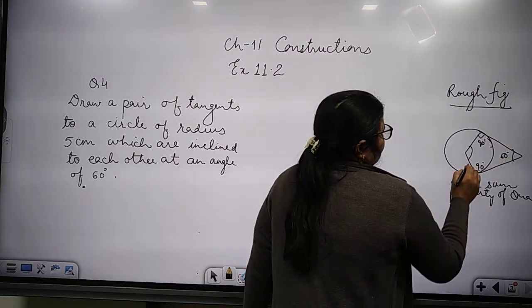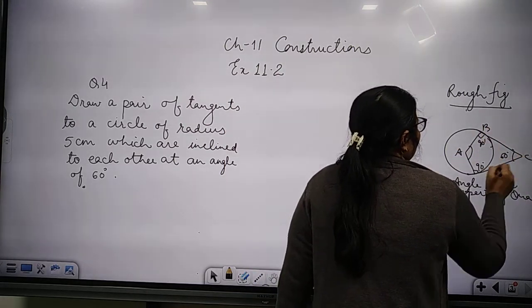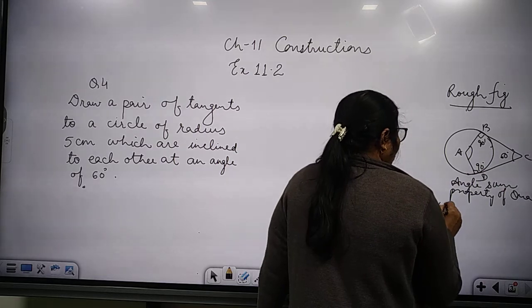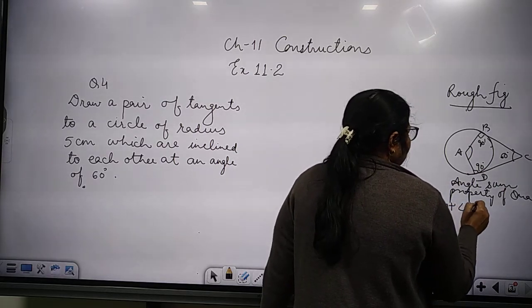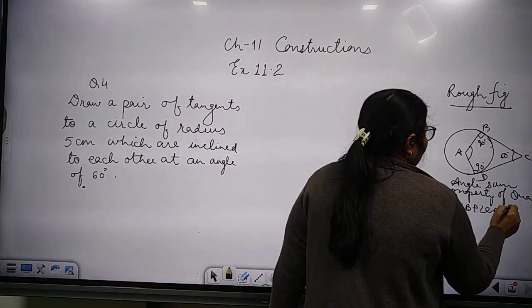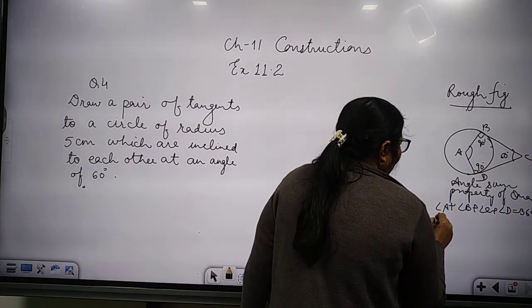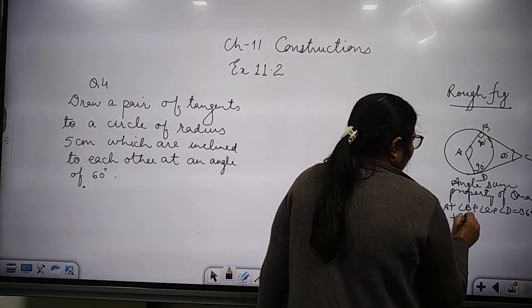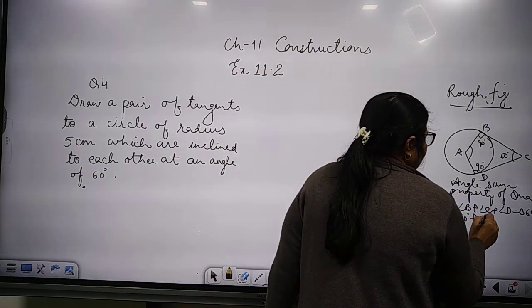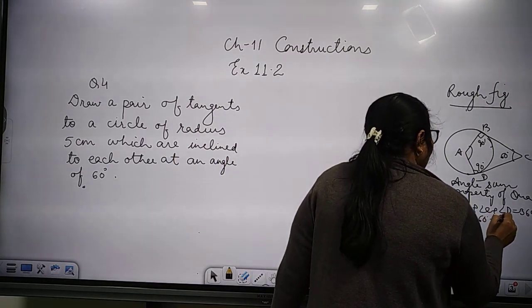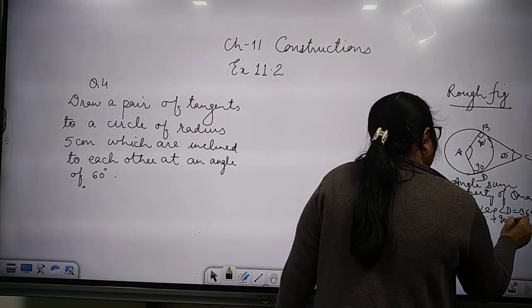then A, B, C, D. Angle A plus B plus C plus D equals 360 degrees. So here, A we don't know. B is 90, C is 60, and D is 90.